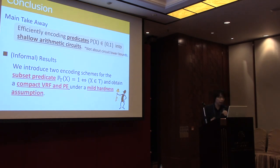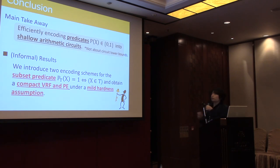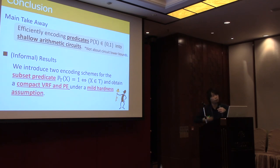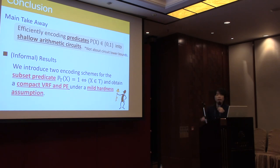In conclusion, the main takeaway is that many cryptographic schemes embed predicates in an implicit manner. By detaching the predicates from those cryptographic schemes, embedding them into shallow arithmetic circuits, and bringing that back to the cryptographic primitive, we can sometimes obtain significant efficiency gains in the actual construction. Thank you for listening.